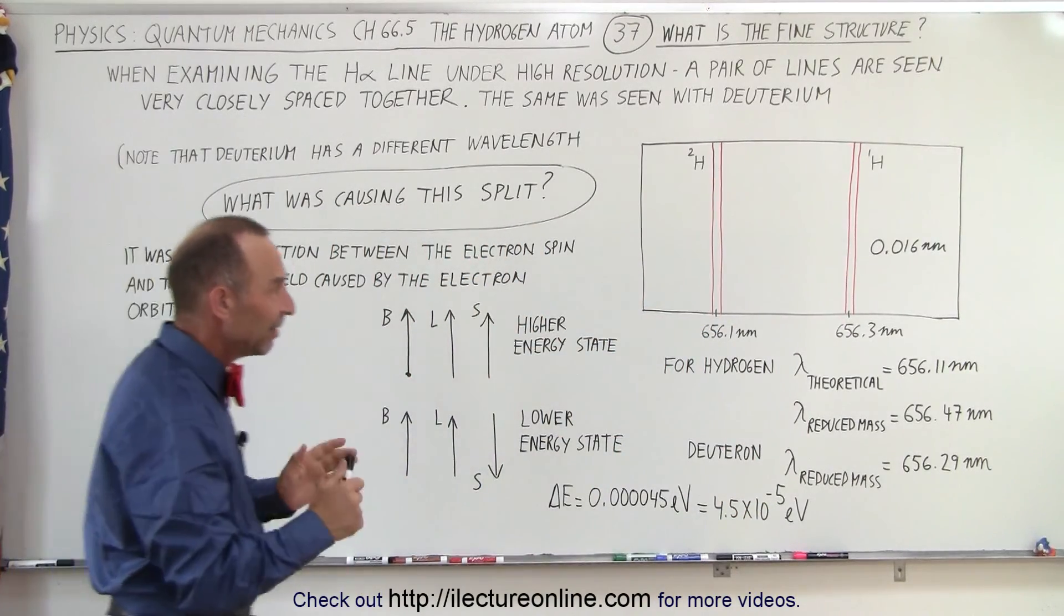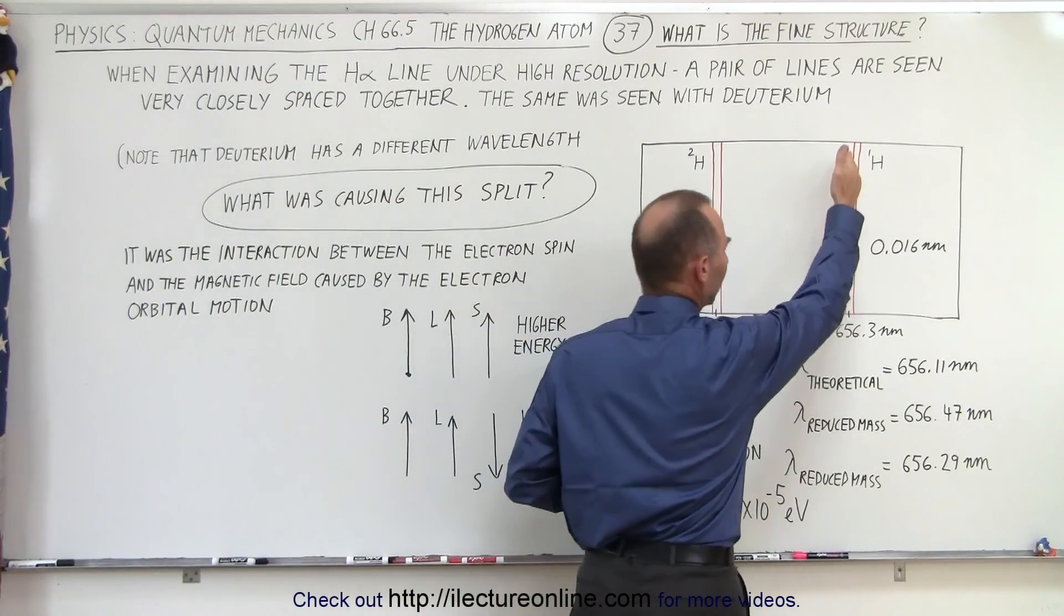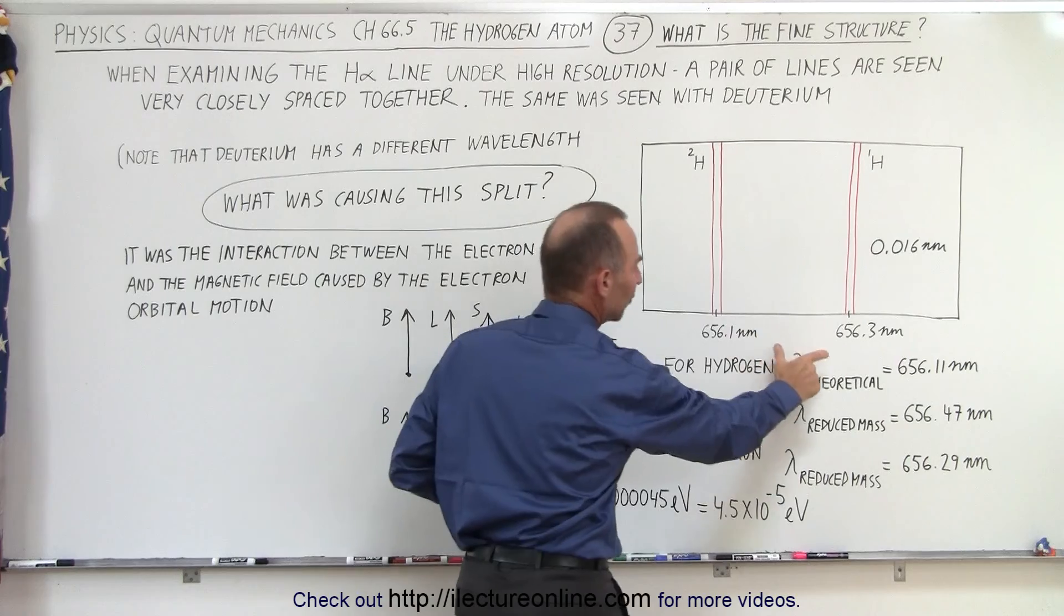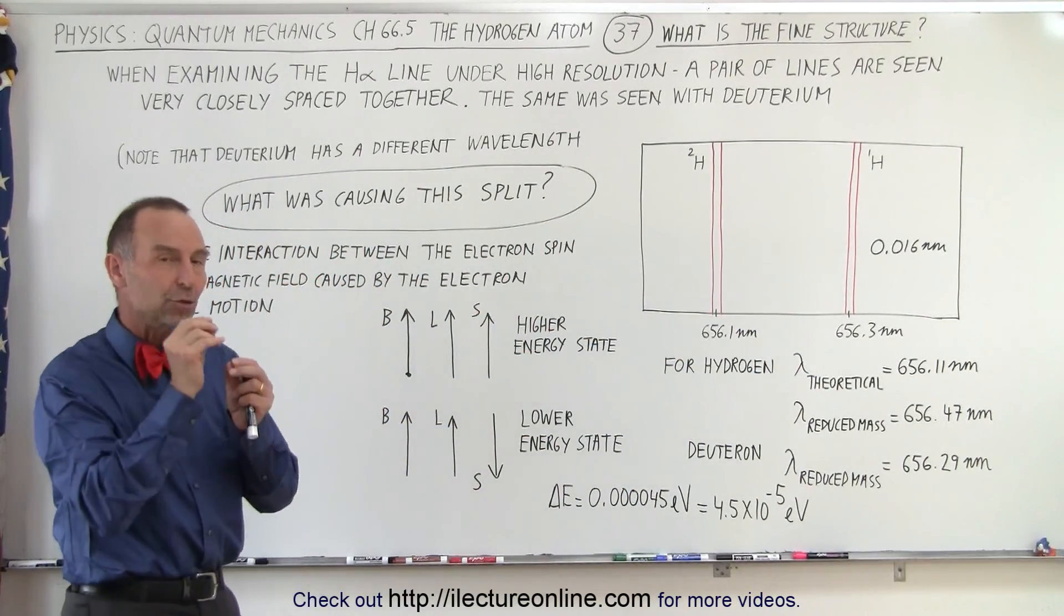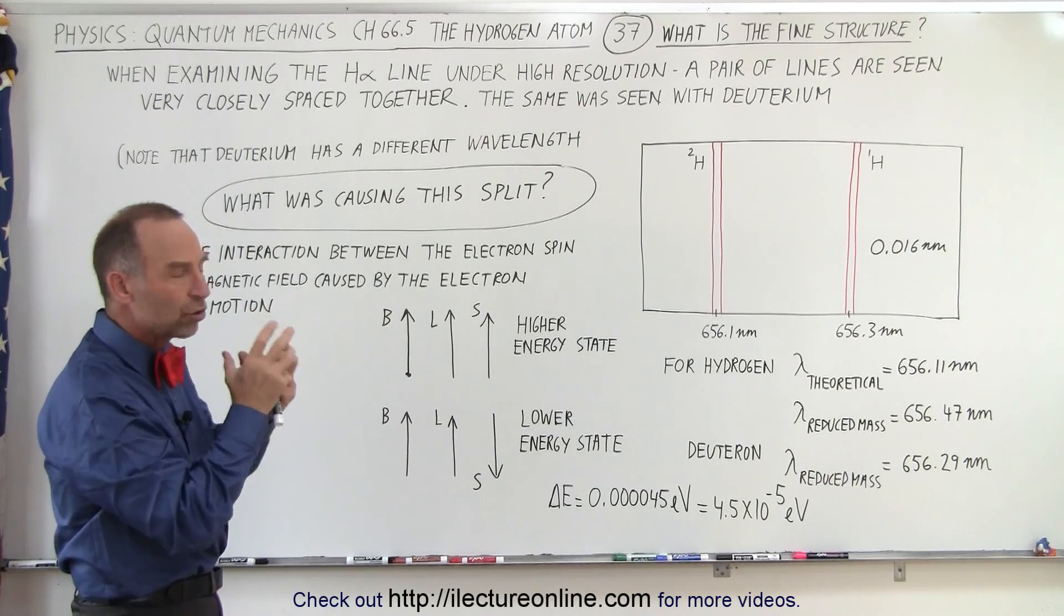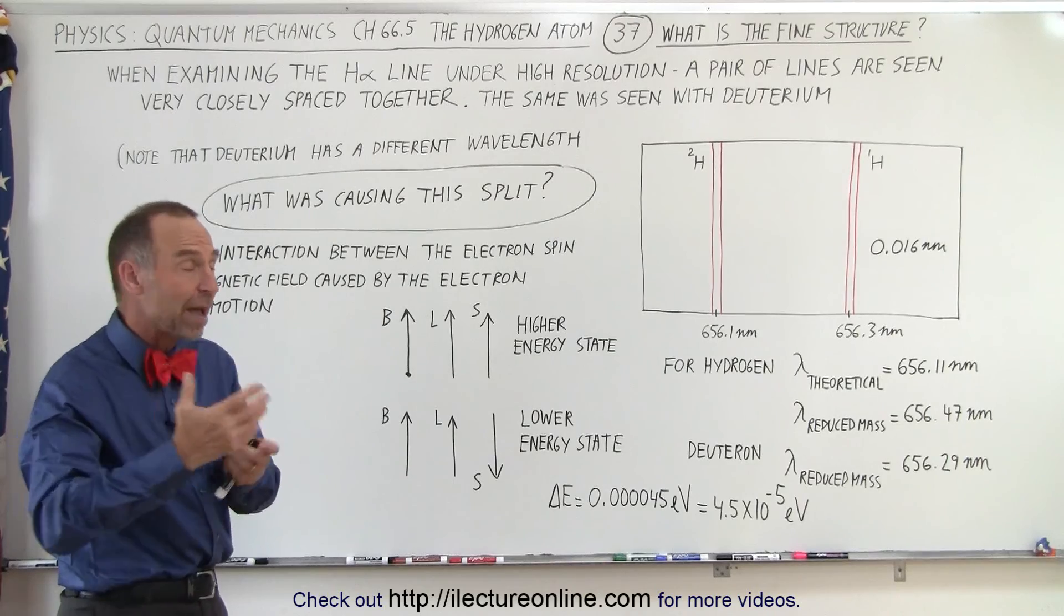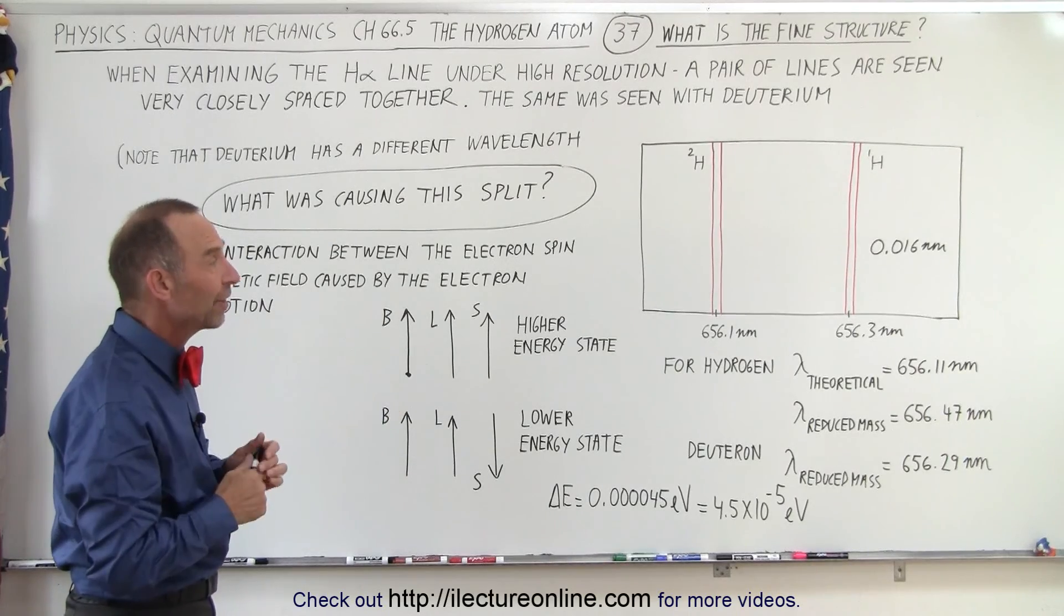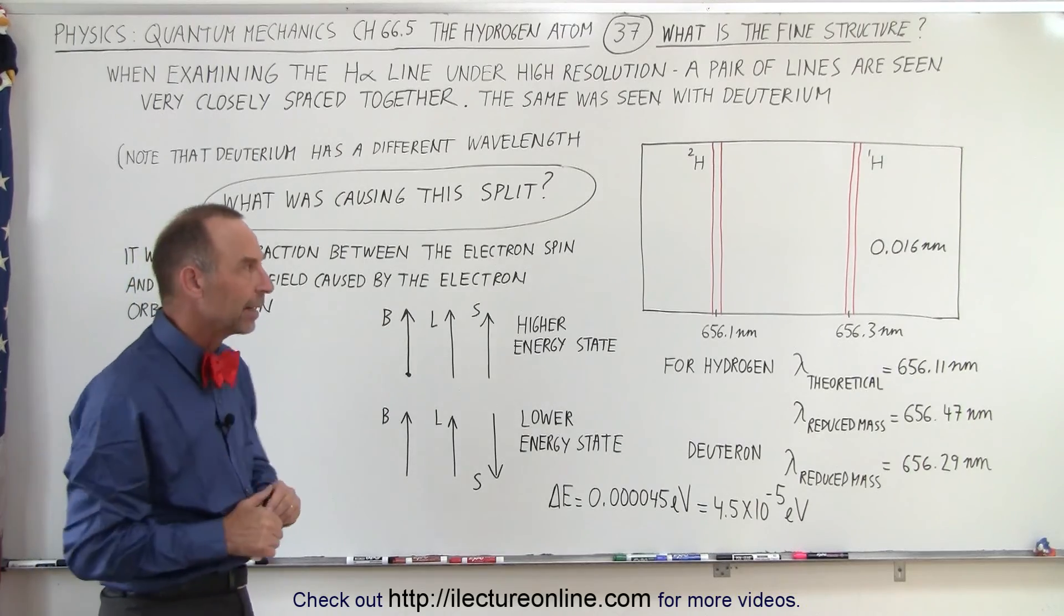Now there's a slight difference between the H-alpha line that we get from a deuteron versus a single hydrogen atom. The difference, it's only 0.2 nanometers, is because the deuteron has a neutron in its nucleus, which causes the reduced mass to be a little bit different, and we'll talk about the reduced mass affecting the wavelengths that we get from the electron jumps in a different video.